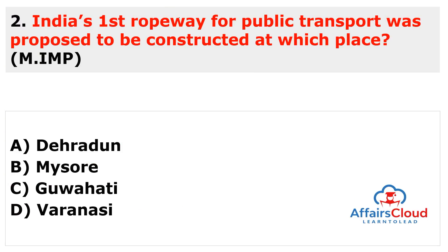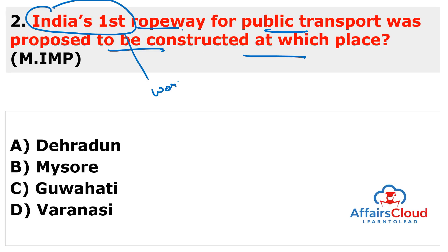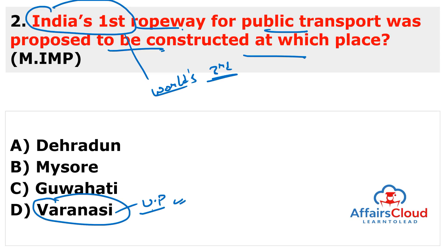Next question: India's first ropeway for public transport was proposed to be constructed at which place? This is very important — it is India's first and world's third ropeway for public transport, proposed to be constructed in the city of Varanasi, Uttar Pradesh, to ease traffic congestion.